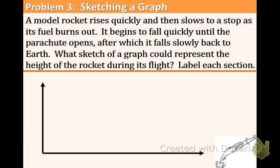A model rocket rises quickly and then slows to a stop as its fuel burns out. It begins to fall quickly until the parachute opens, after which it falls slowly back to earth. What sketch of a graph could represent the height of the rocket during its flight? Label each section. Well first let's think to ourselves, what are the variables? What is changing in this situation? Those two quantities will be our labels for the x and y axis. So think about it for a second.